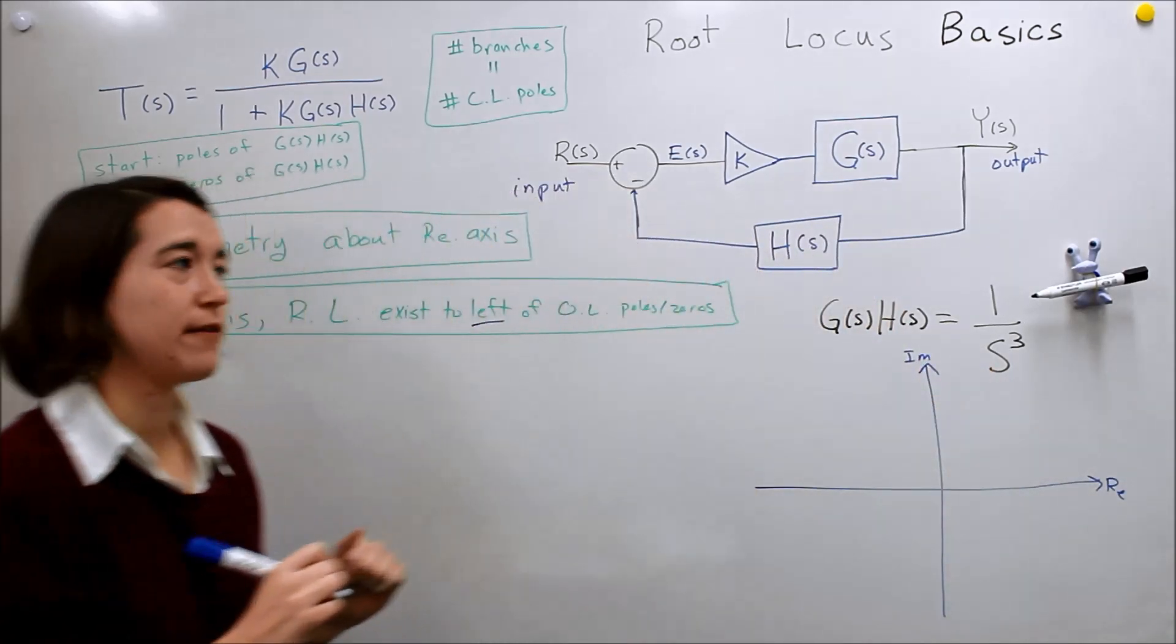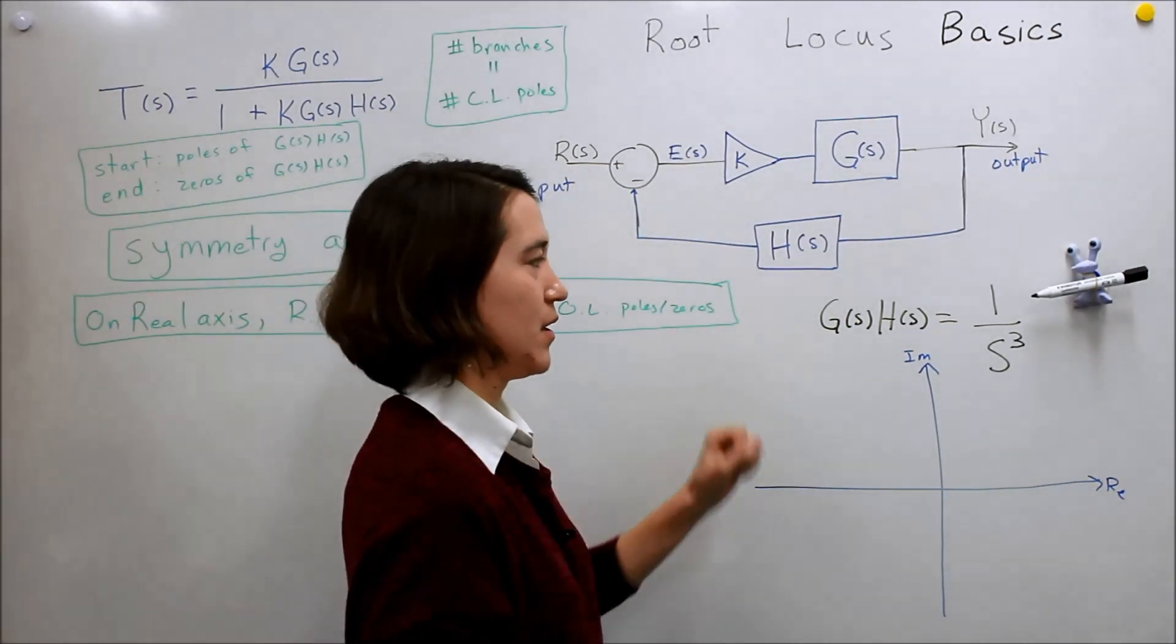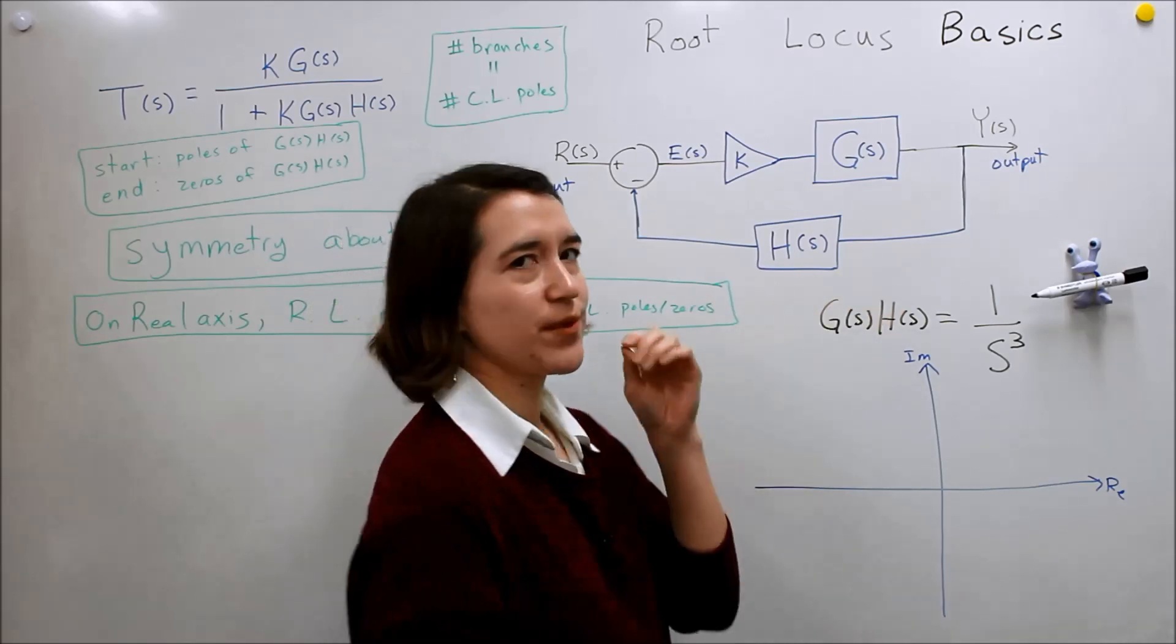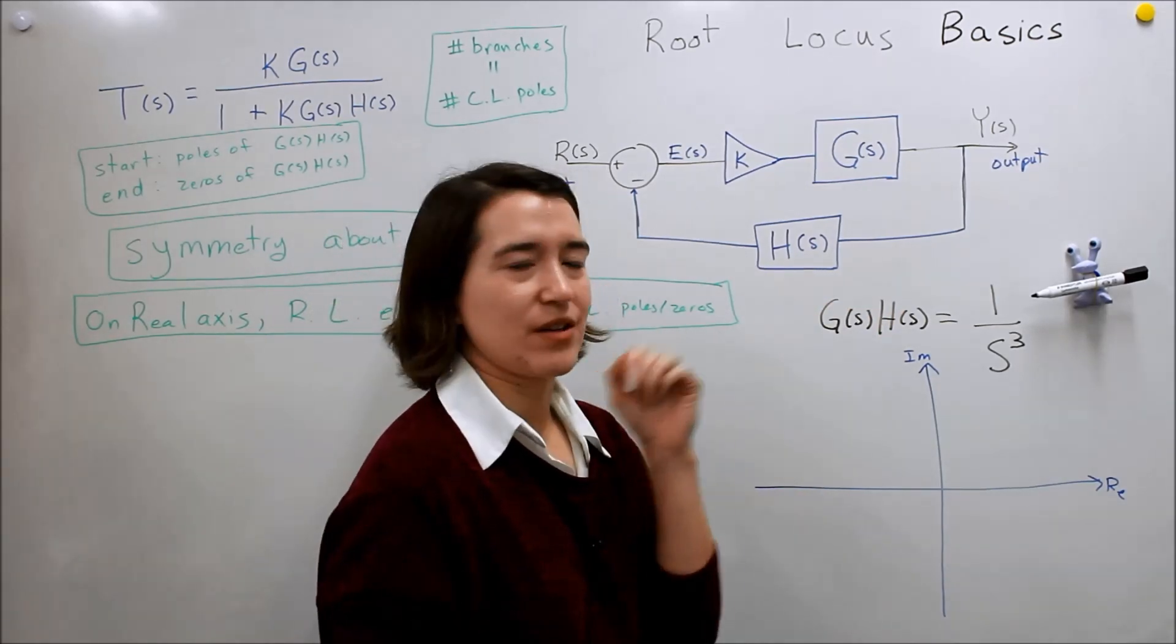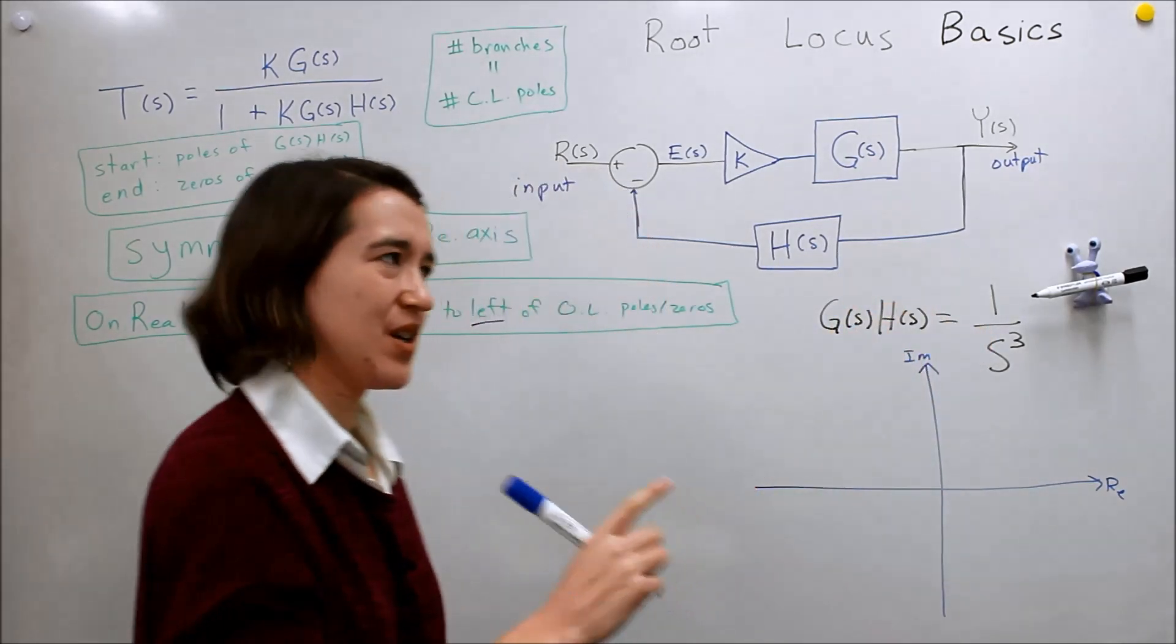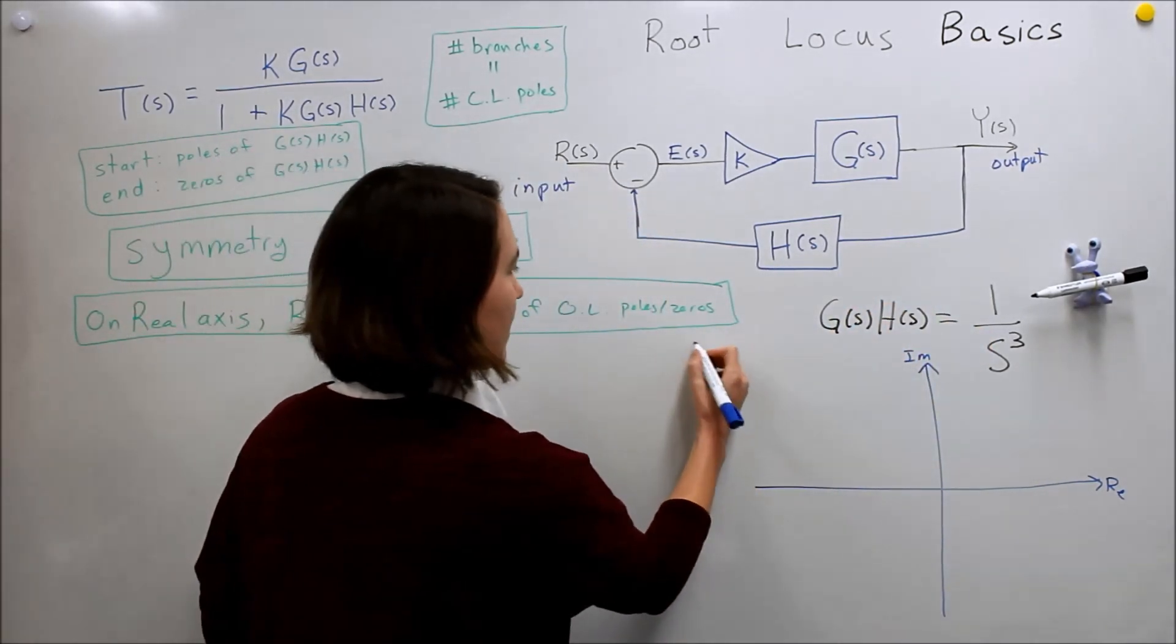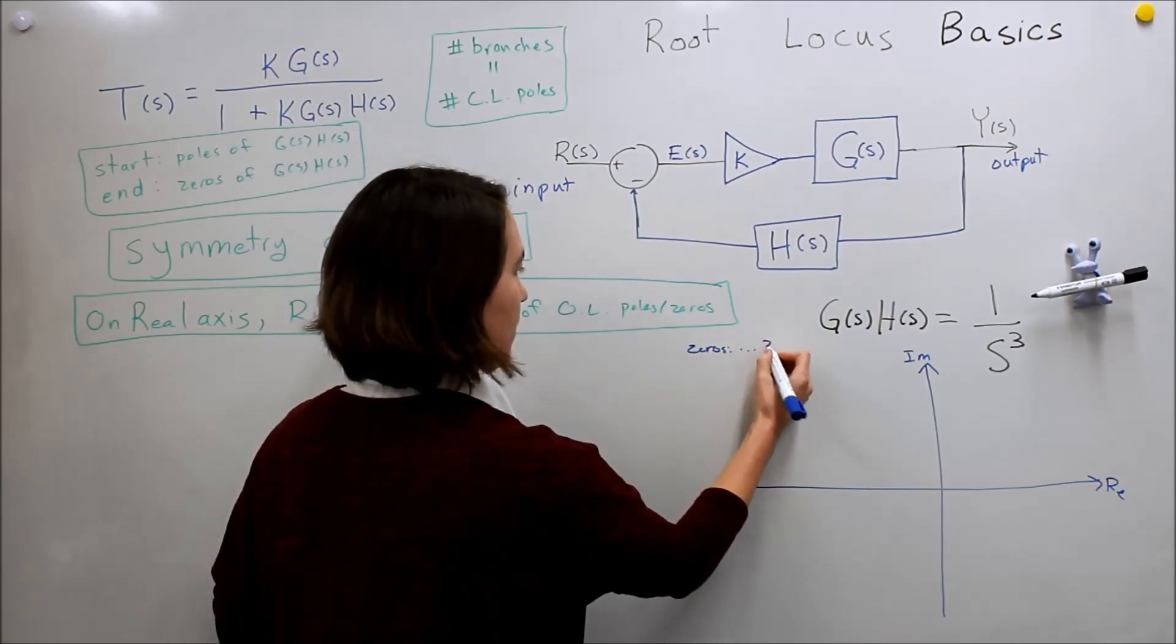We can find the roots and poles of our open loop system. If we write down our poles, we'll actually see there's no poles - sorry, no zeros. There's no zeros here. So zeros are zeros, if we wrote this out: zeros, none, zero.